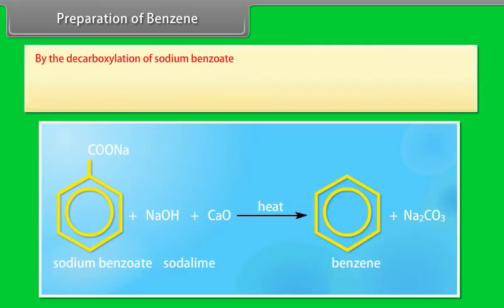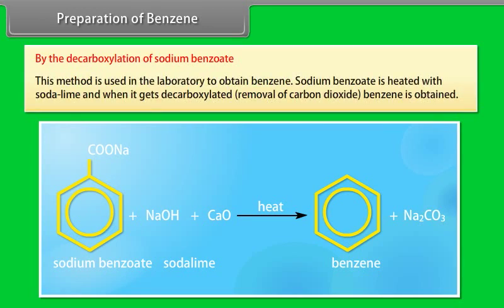Preparation of benzene. By the decarboxylation of sodium benzoate. This method is used in the laboratory to obtain benzene. Sodium benzoate is heated with soda lime and when it gets decarboxylated, that is removal of carbon dioxide, benzene is obtained.